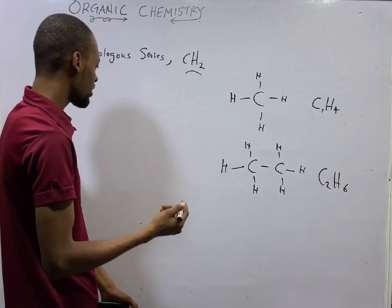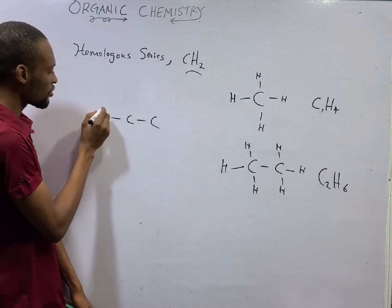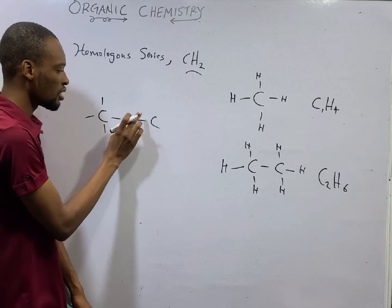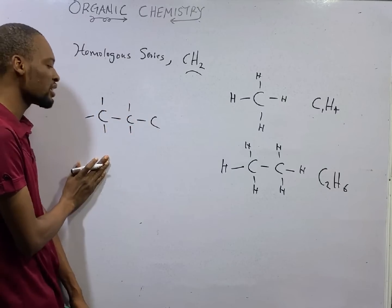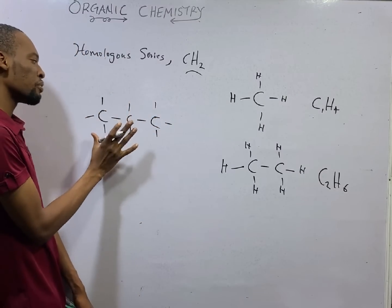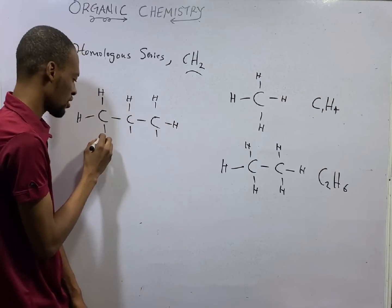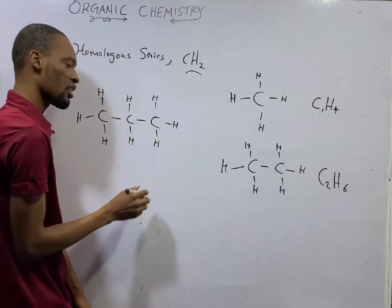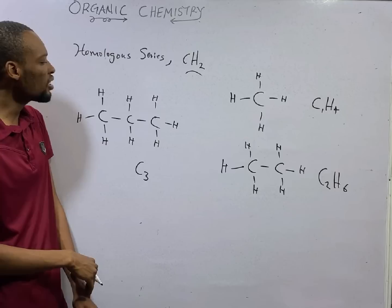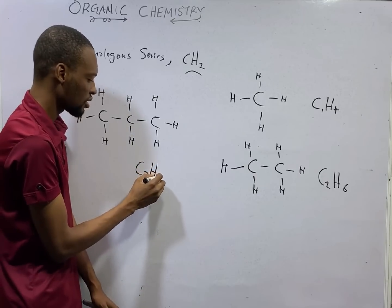Let's try to see the third member. The third member will be the one with three carbons. The first carbon has one bond already, which means three more will work. The middle carbon has one bond on each side, so two remaining positions. The last carbon bonds are also completed with hydrogen. We have C3, and counting the hydrogens: one, two, three, four, five, six, seven, eight — hydrogen is eight. So this is C3H8.